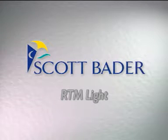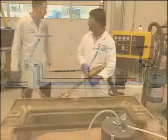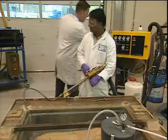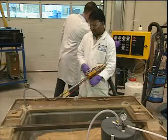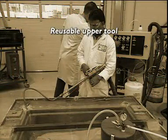RTM Light is an extension of the vacflow process, using an injection machine to introduce the resin into the mold. It uses the same mold designs as vacflow. RTM Light offers advantages to the molder, including a reusable upper tool.